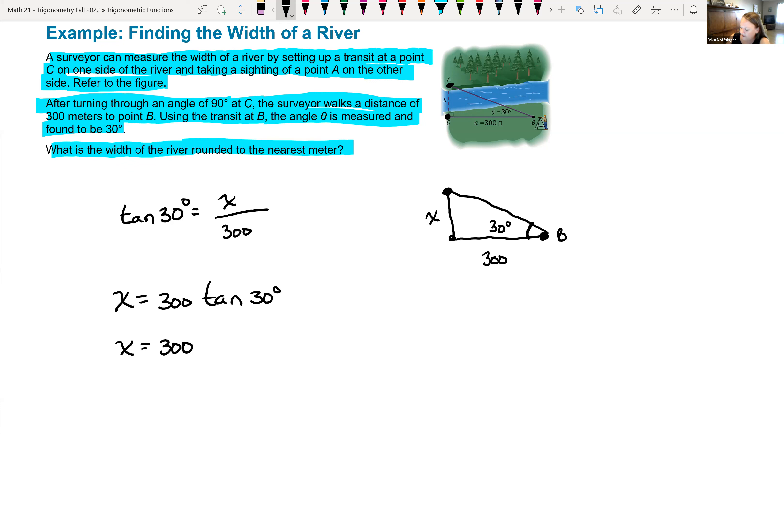So, tangent of 30 degrees, this one is root 3 over 3. 3 goes into 300 evenly 100 times. So, the exact answer would be 100 root 3 meters. But they wanted us to round to the nearest meter. So, multiplying 100 times root 3, we get that is approximately 173.2. The 2 would keep the 3 the same. So, this is approximately 173 meters.